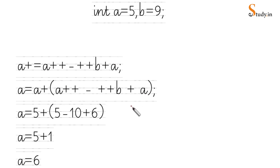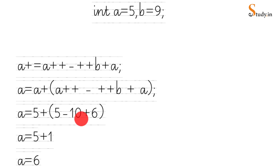Put the original value of a = 5 outside the bracket. Inside the bracket: a++ is post-increment so use 5, then a becomes 6. Minus sign. ++b is pre-increment so b = 9 becomes 10, use 10. Plus a — the last value of a is now 6. So: 5 + (5 - 10 + 6). Solve the bracket: 5 - 10 + 6 = 1. Then 5 + 1 = 6. The answer is 6.